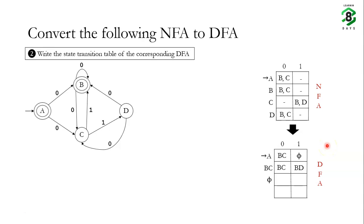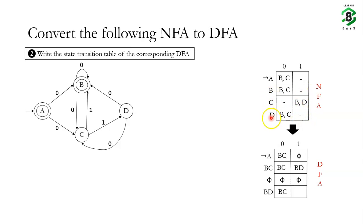For state phi, since it is a trap state, on input 0 or input 1 it remains in state phi. Next we consider state BD. On input 0, the NFA transitions to state B or state C for both B and D, so the DFA goes to state BC. On input 1, there is no transition in the NFA for both state B and state D, so we put a transition to state phi.